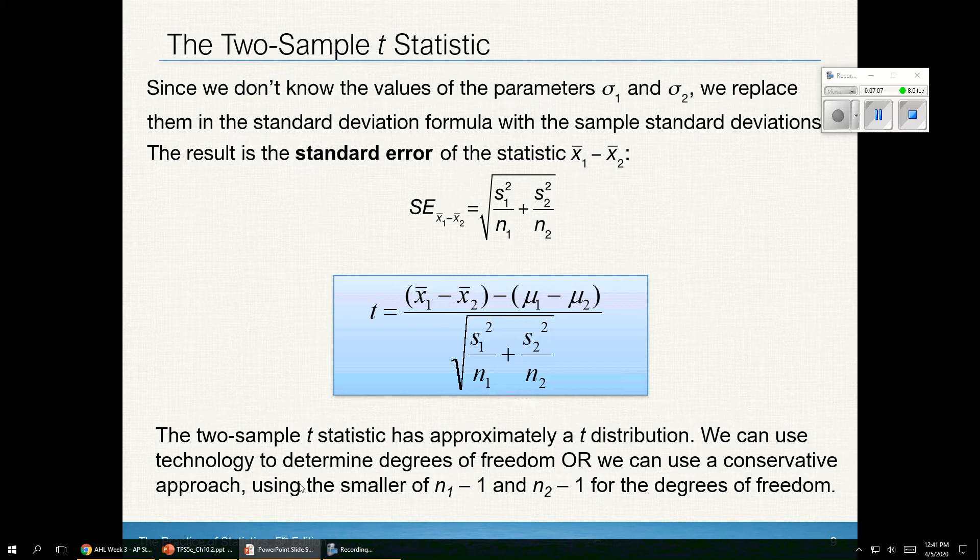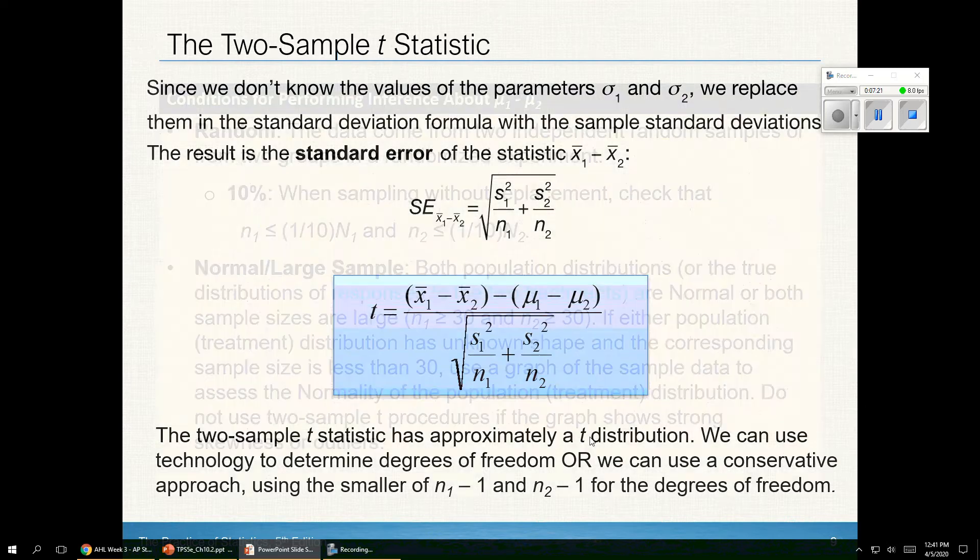Generally, both methods are going to give comparable answers. The conservative approach makes it a little bit more difficult to reject H₀, or it makes that confidence interval perhaps a little bit wider than the more accurate one you would get from technology.